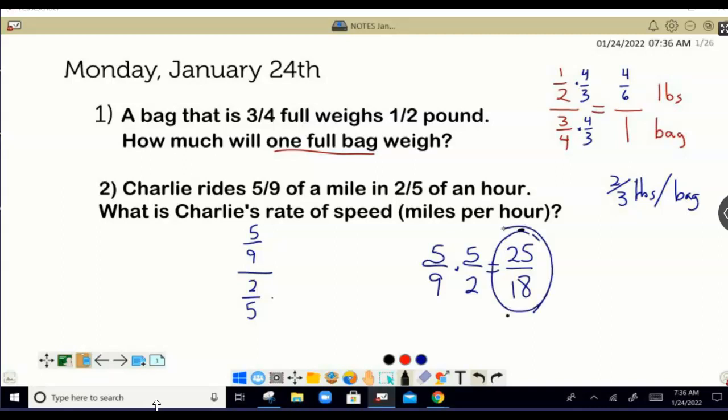By the way, this is the answer, 25-18ths. I do need to clean this up a little bit here because it is an improper fraction. So I know it's going to be 1-7-18ths. So 1-7-18ths. I hope that helped you understand how to do some unit rates involving fractions.